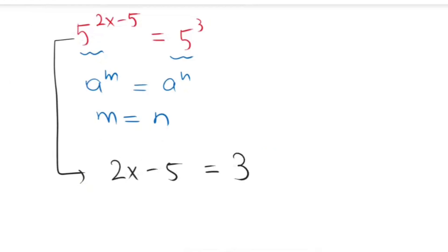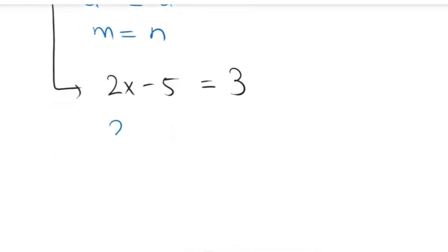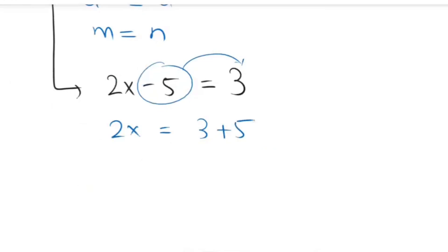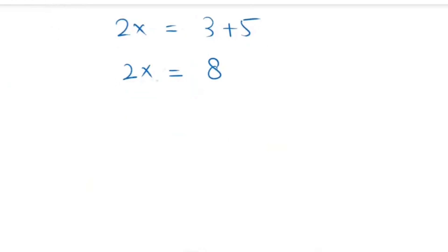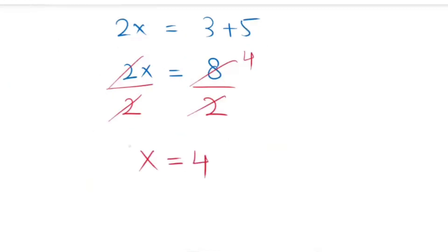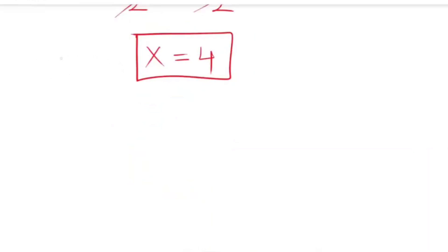Now we solve this equation for x. 2x minus 5 equals 3. Moving negative 5 to the right-hand side turns it into positive 5, so 2x equals 3 plus 5, which equals 8. This 2 is multiplying, so we divide both sides by 2. The 2 cancels out, and 8 divided by 2 gives us 4. So the value of x is 4.